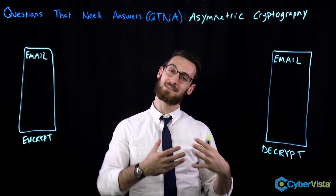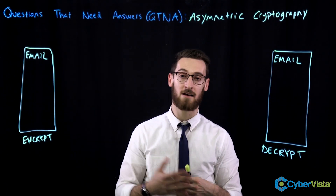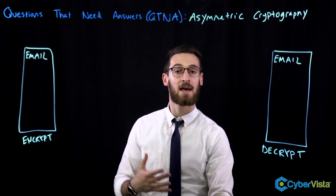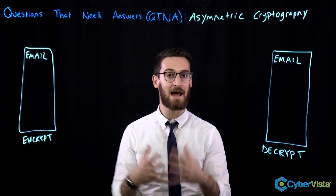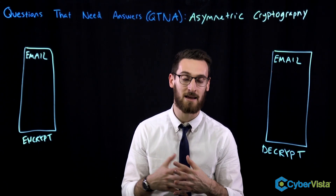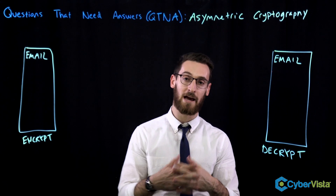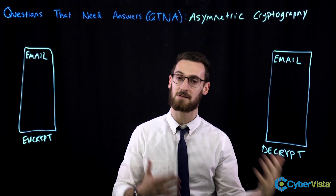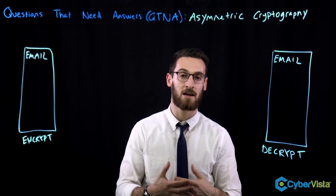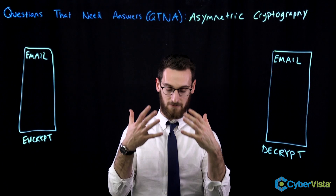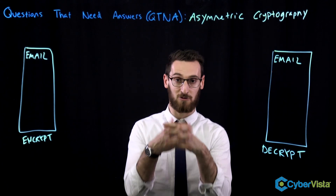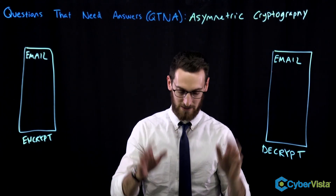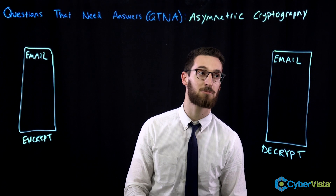Remember, asymmetric cryptography is the system where everybody has two keys: a public key and a private key. These two keys are mathematically related in such a way where one encrypts and the other decrypts, and vice versa. They are fated together like Romeo and Juliet — they're made for each other.